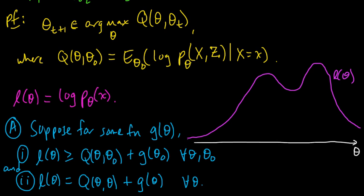And now let's suppose, let's call, let's define this thing here, the right-hand side of this. Let's define this, maybe I'll write it over here. h(theta) to be Q(theta, theta_0), actually h sub theta_0, depends on theta_0 also, plus g(theta_0). Okay, so that's h, and l(theta) is an upper bound for h(theta), for any theta_0. So let's think about when theta_0 equals theta_t.